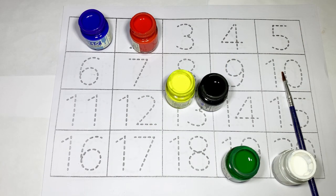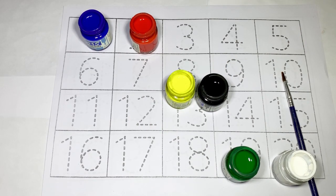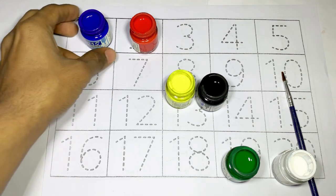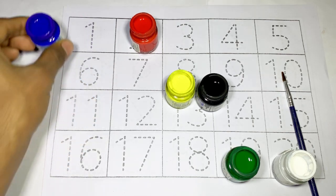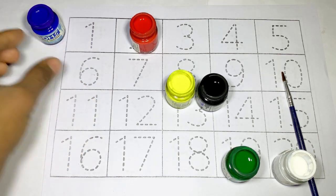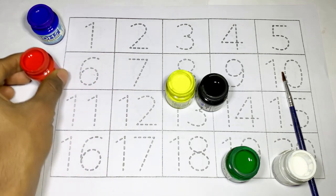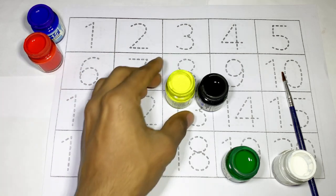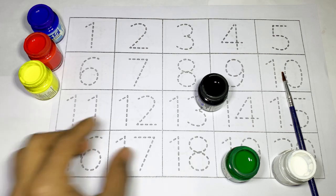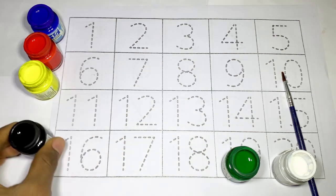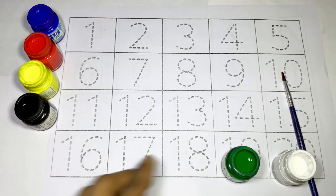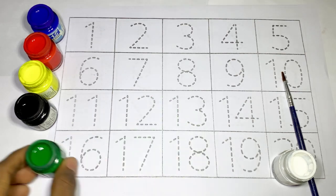Hello kids, welcome back to the channel. Today we will learn numbers. First, let's name the colors: blue color, red color, yellow color, black color, green color, white color.